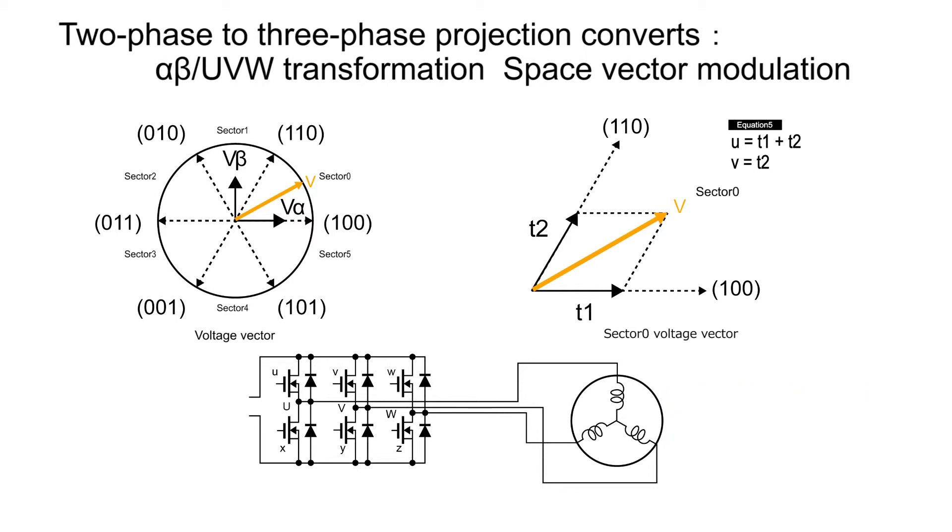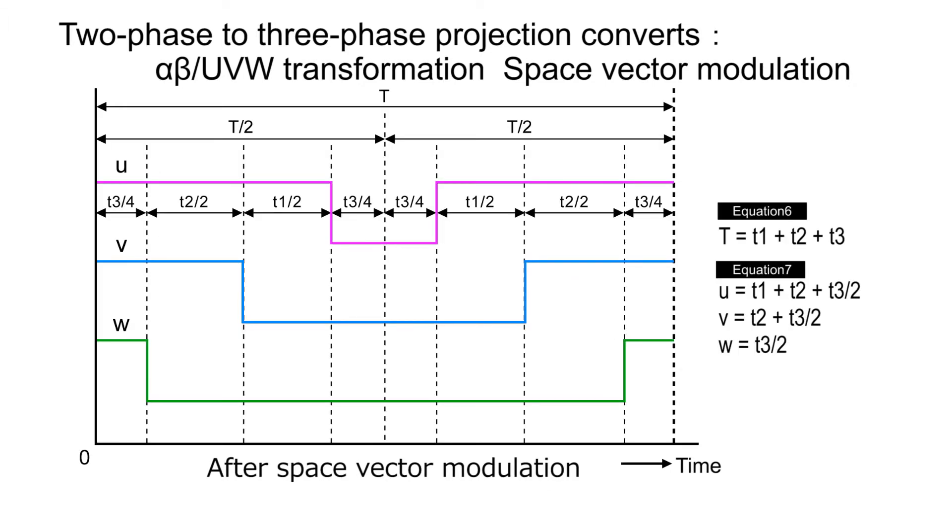Furthermore, in order to make the waveform inputted into a driver in space vector modulation, a certain fixed cycle T is decided. Now, the voltage vector V in the sector 0 was decomposed into T1 and T2. When the cycle period T is expressed as equation 6, sector 0 does nothing during time T3, during which U, V, W is either 000 or 111.